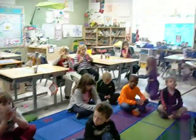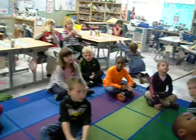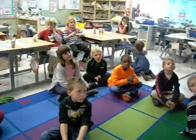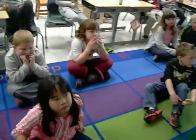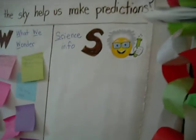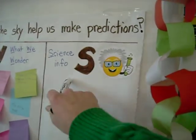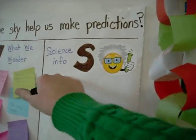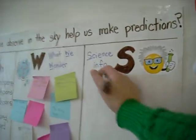Alrighty, friends. Now we have used the model globe, and we've become the model ourselves. Now it's time for us to go to the S column of our clues chart — Science, info, or information.